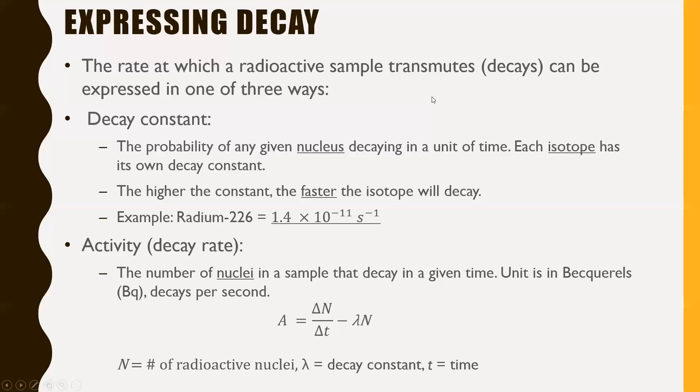Expressing decay: the rate at which a radioactive sample transmutes, or decays, can be expressed in one of three ways. The first one is called a decay constant. This one isn't super common, but it's the probability of any given nucleus decaying in a unit of time. Each isotope has its own decay constant. The higher the constant, the faster the isotope will decay. Decay constant is measured in seconds to the power of negative one, or one over seconds.